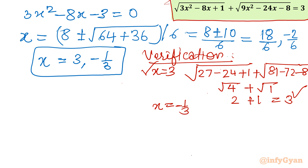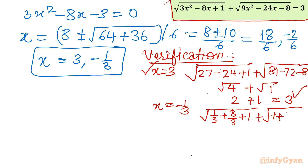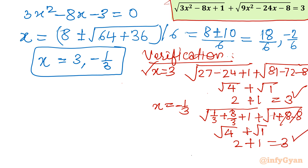Now for x = -1/3: square root of (3·(1/9) - 8·(-1/3) + 1) plus square root of (9·(1/9) - 24·(-1/3) - 8). That gives square root of (1/3 + 8/3 + 1) plus square root of (1 + 8 - 8) = square root of (9/3 + 1) + square root of 1 = square root of 4 + 1 = 2 + 1 = 3. This value is also true. So the final solutions are x = 3 and x = -1/3.